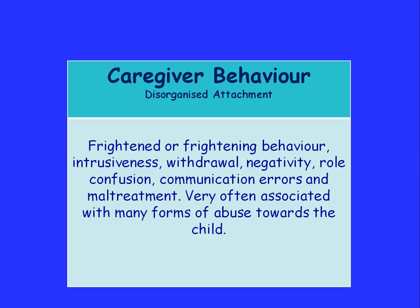Sadly, the caregiver may be either very frightened themselves or may generate frightening behaviour. They are intrusive, withdrawn, and there is lots of negativity and role confusion — where a child takes on the adult or parenting role. There are communication errors and maltreatment, and it is very often associated with many forms of abuse towards children. Some children who have experienced child abuse can develop what is called disorganised attachment.